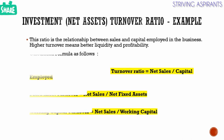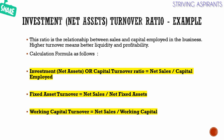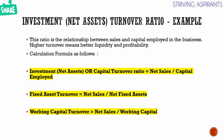Finally we will check the investment or net assets turnover ratio example. This constitutes two ratios: fixed asset turnover and working capital turnover. The formulas are: investment or capital turnover ratio equals net sales divided by capital employed; fixed asset turnover equals net sales divided by net fixed assets value; and working capital turnover equals net sales divided by working capital.